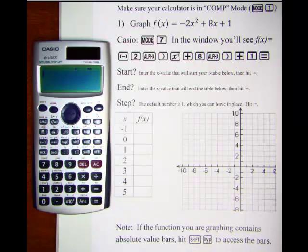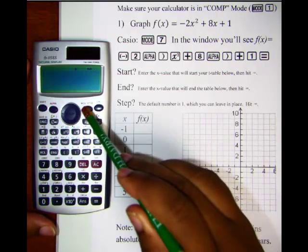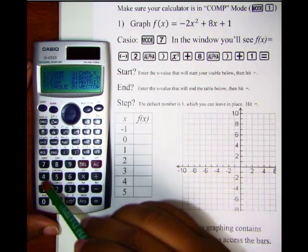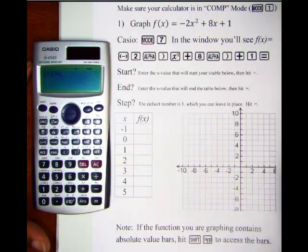Let's make sure our calculators are on by hitting the on button and then we're going to select mode 7. That's the table mode.